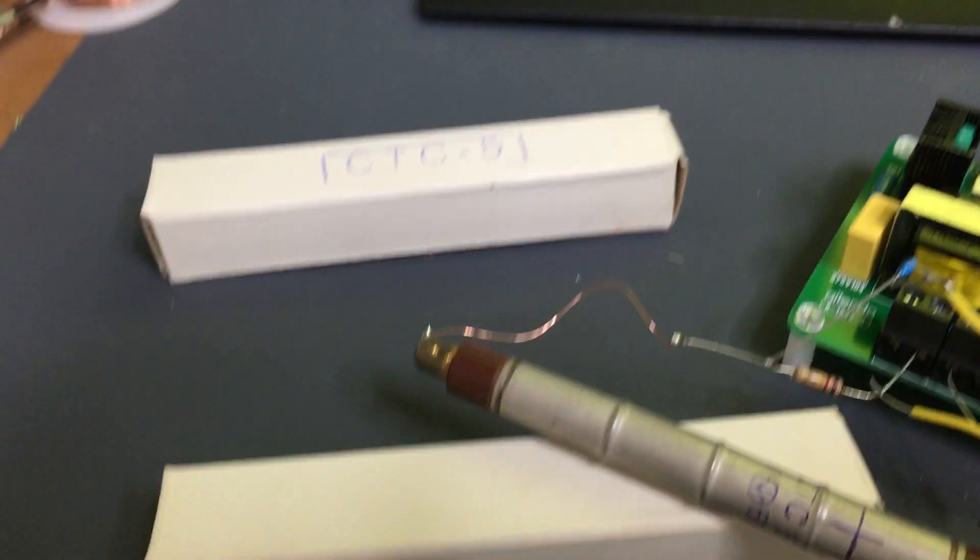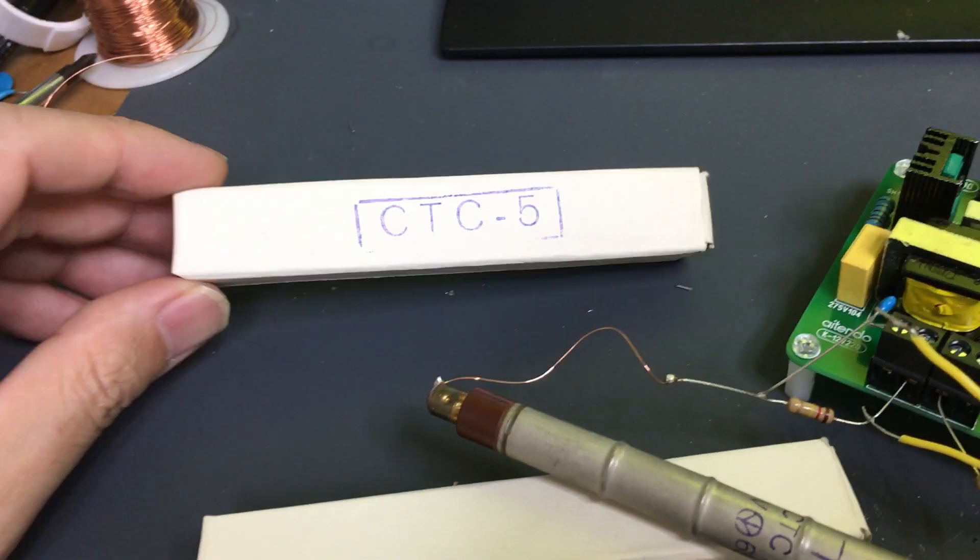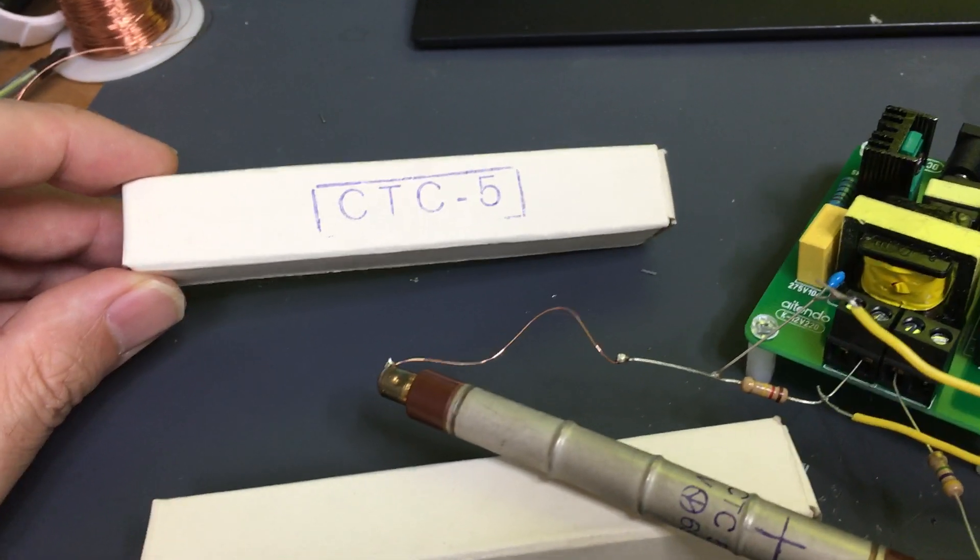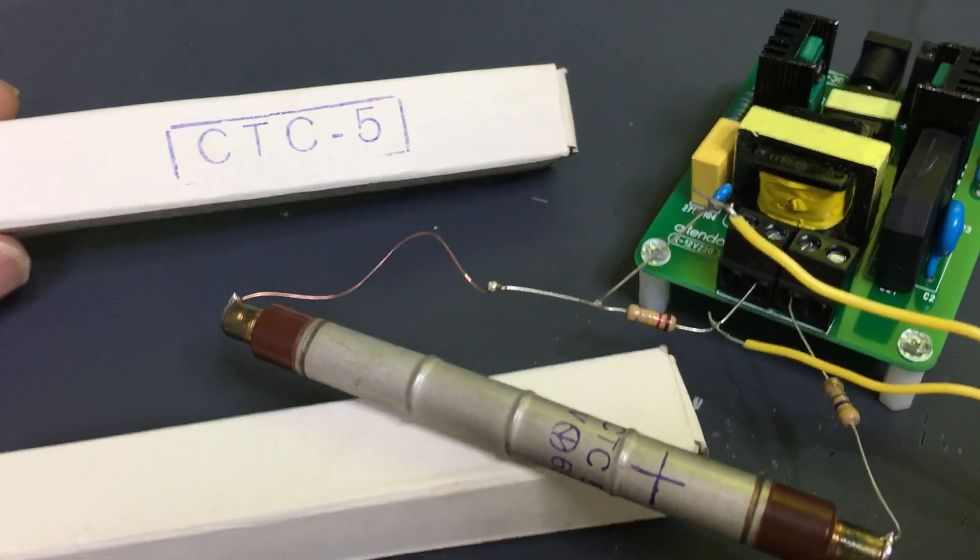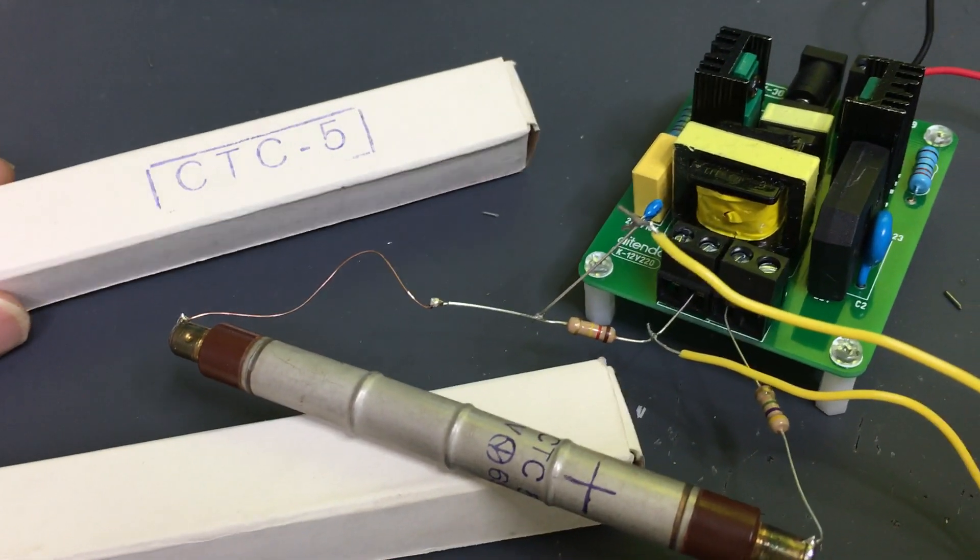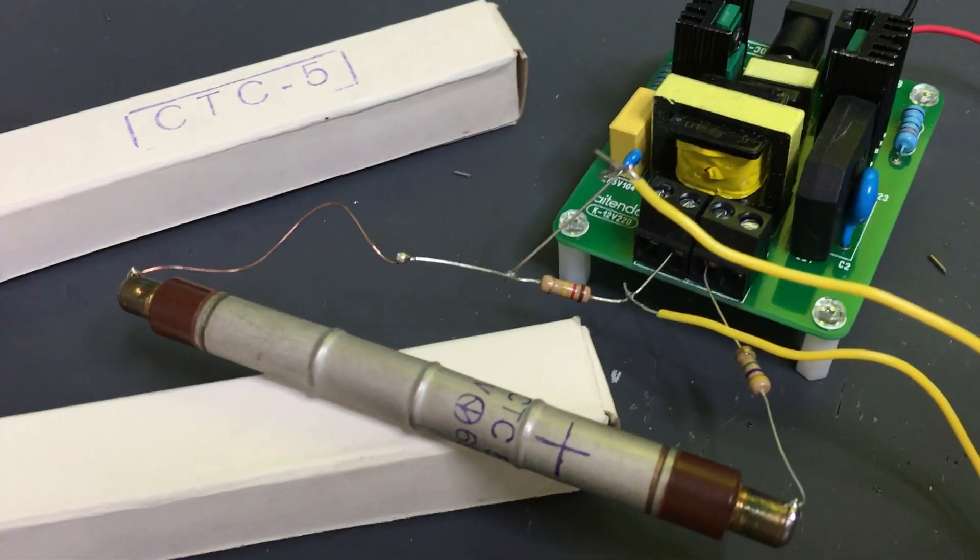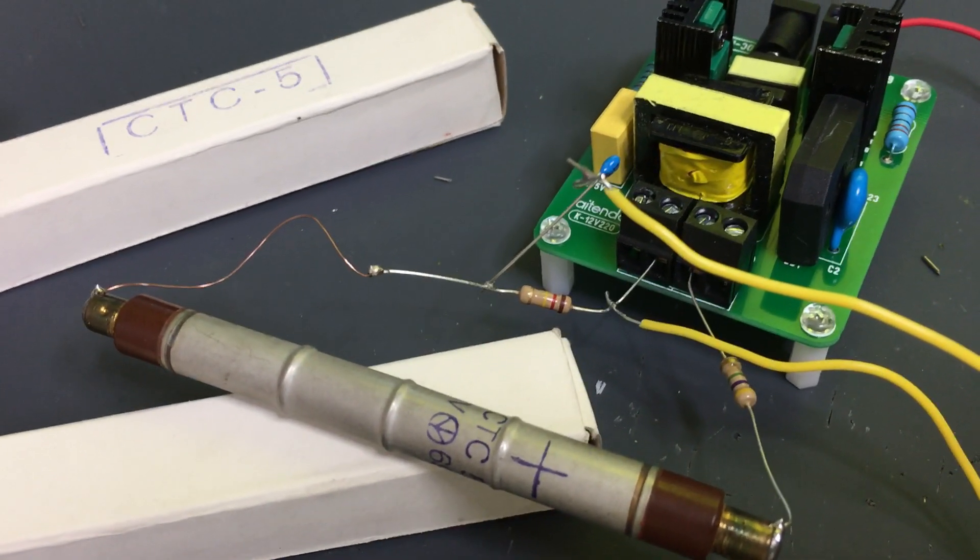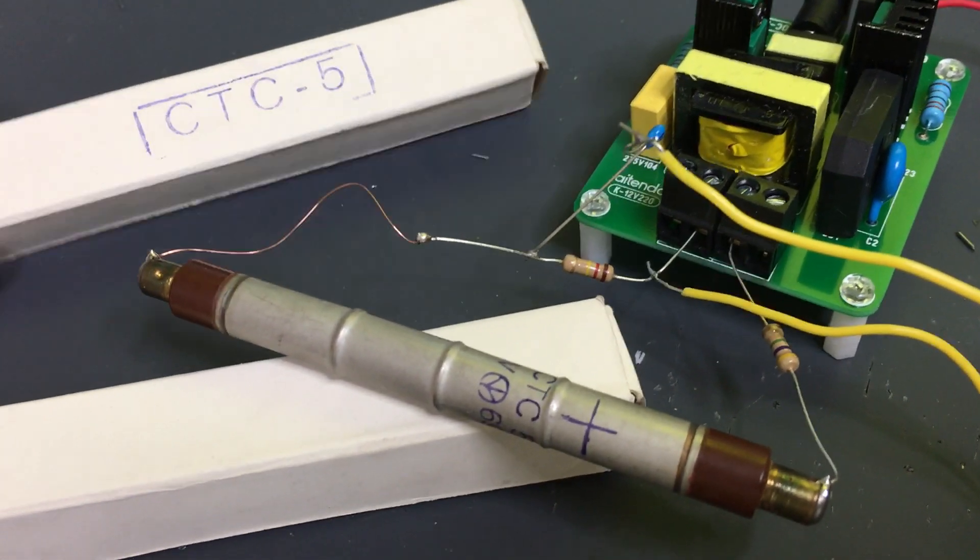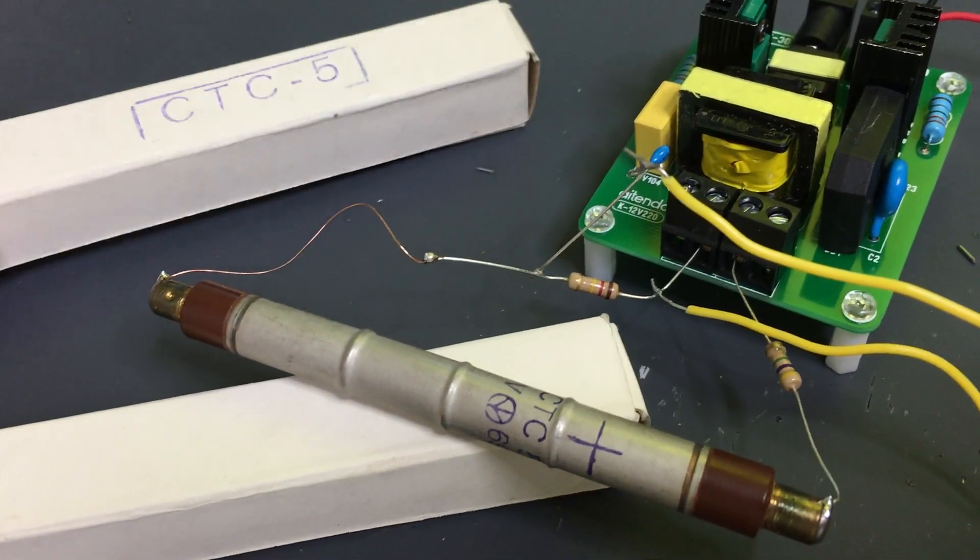Hello, so this time I got the Geiger Miller tube named CTC-5 made in Russia. And instead of my previous Geiger Miller counter, I just changed the tube with this newer one.